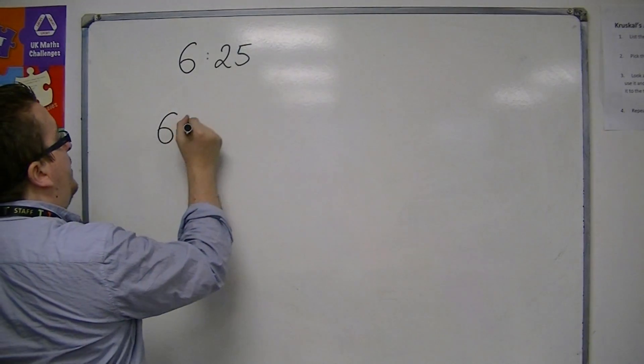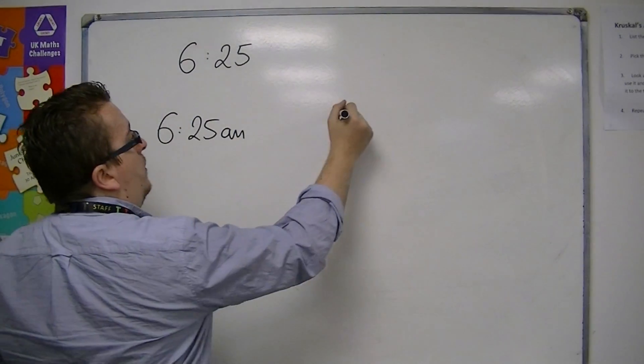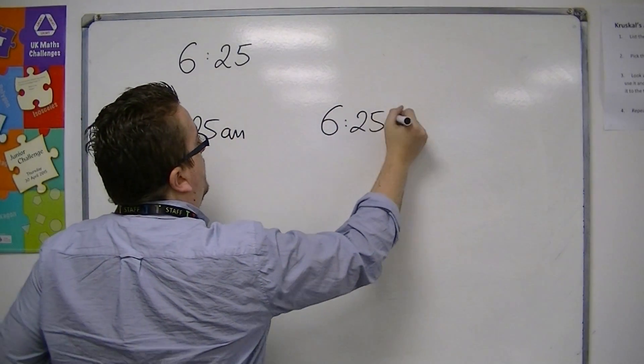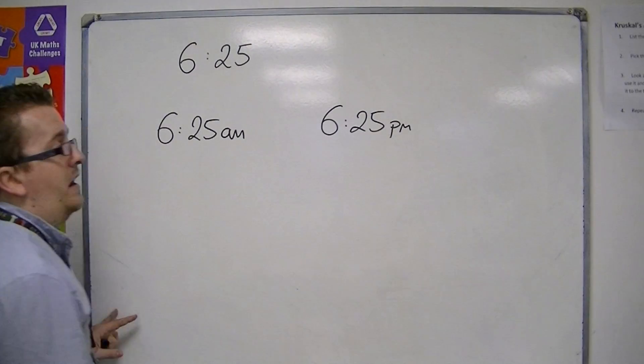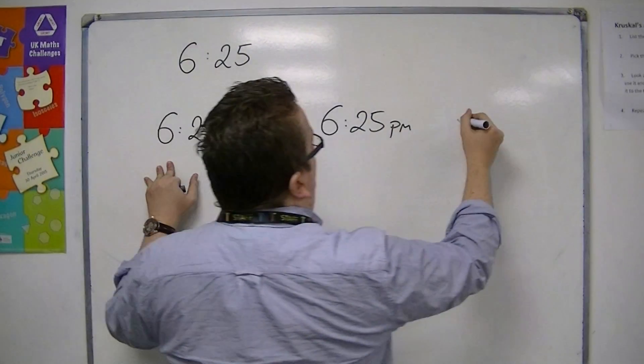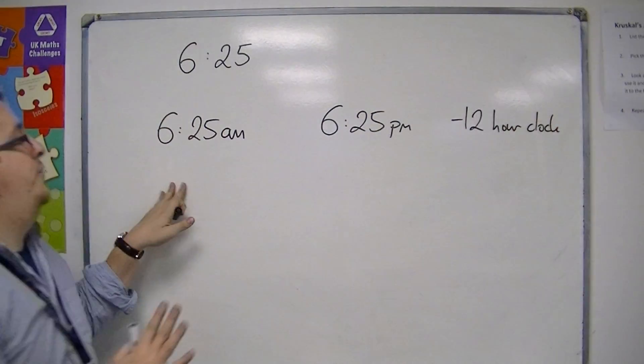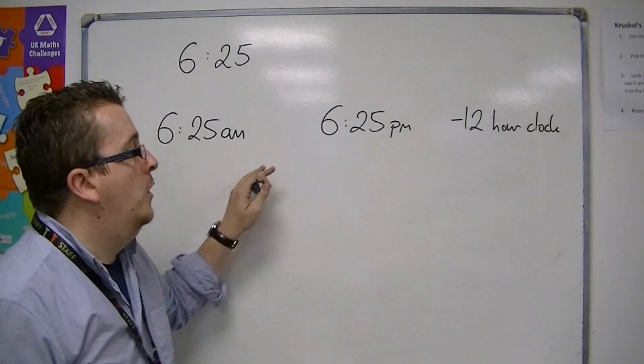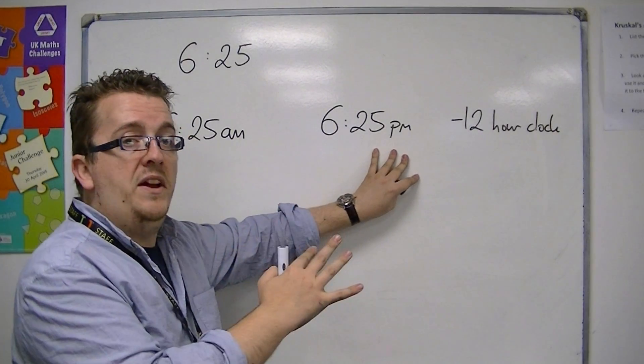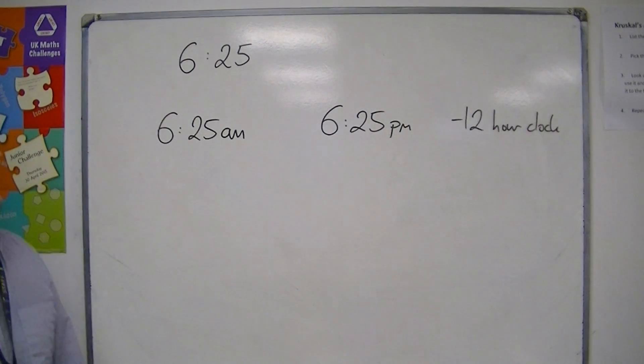So you could have 6.25am, so in the morning, or 6.25pm in the evening. And this is your 12 hour clock, because it specifically identifies whether you are in the morning or if you are after midday, and in this case, considered in the evening rather than the afternoon.